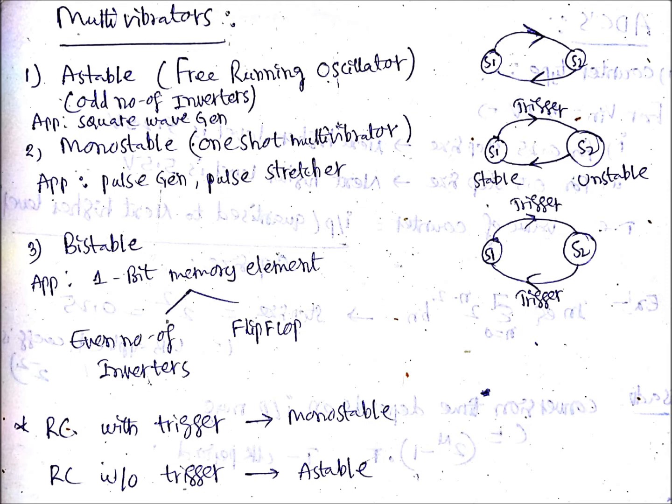Coming to monostable multivibrator, by the name itself you can understand that one state is stable, which is also known as one-shot multivibrator. Here one state is stable and one more state is unstable. It is not going to change at all until and unless you apply a trigger. That is the meaning of monostable - you are making a stable state to an unstable state when you apply a trigger pulse.